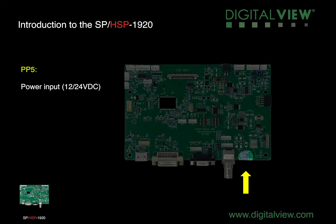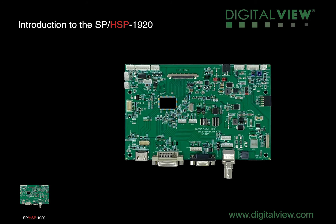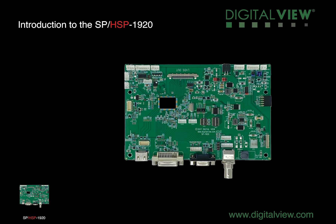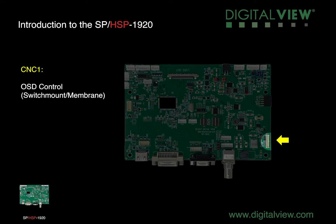PP5 is the power input that supports either 12 or 24 volts DC. PP2 is an alternate power input. CNC1 is for the OSD control using one of the button board solutions.